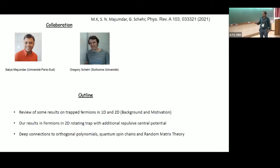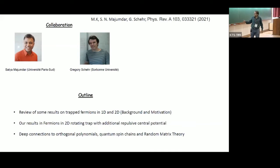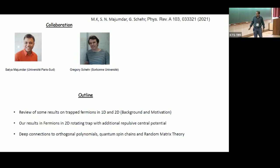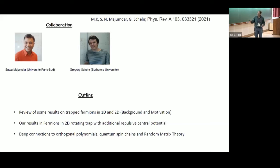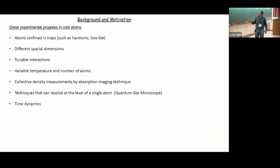The plan is as follows: we are going to review some results on trapped fermions in one dimension and two dimensions, which will give some background and motivation. I'll show our results on fermions in a 2D rotating trap with an additional repulsive central potential, and then I'll discuss some deep connections with orthogonal polynomials and, if I have time, quantum spin chains and random matrix theory. Feel free to stop me and ask questions.